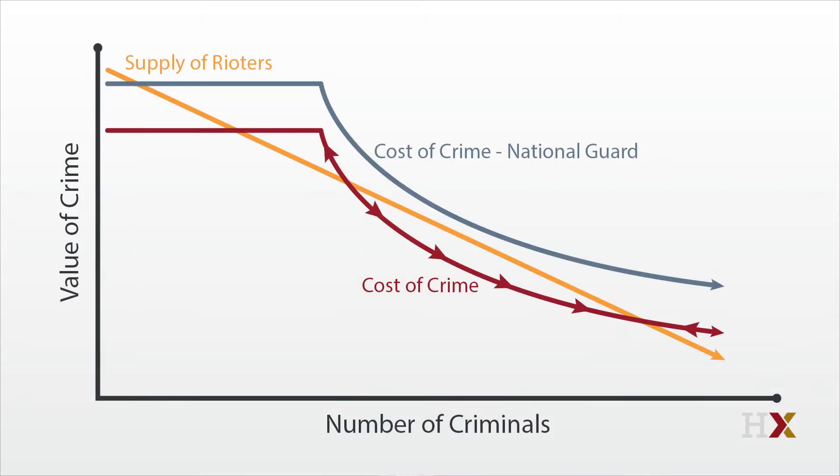How does a riot end? Usually by calling in the National Guard, which means a shift upward in the cost curve, first causing the riot to shrink, and then precipitously to disappear entirely.